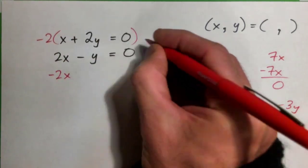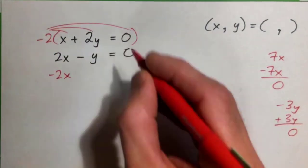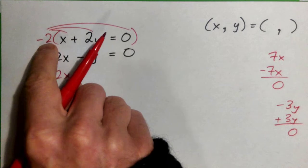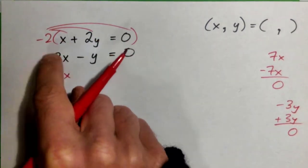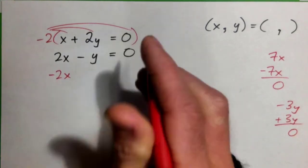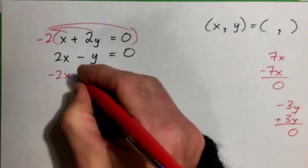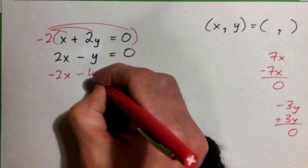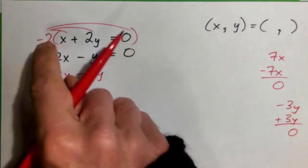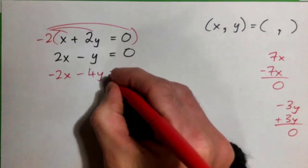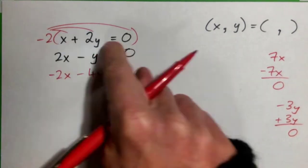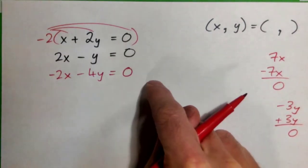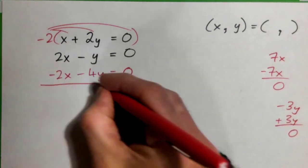If I multiply this equation by negative 2 everywhere, the whole thing, I'll construct the situation where the x is going to eliminate because negative 2 times x is negative 2x, negative 2 times 2y is negative 4y, and negative 2 times 0 is 0. So if I multiply the top equation by negative 2, I get this guy.